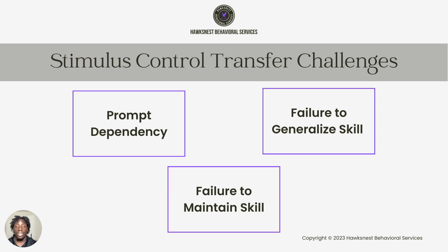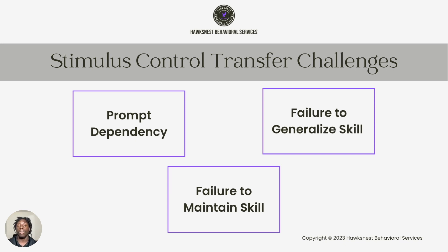Failure to generalize the skill is exactly what it sounds like — your learner having a difficult time being able to generalize the skill in a new environment or across people. That can be a challenge to stimulus control transfer. Then, failure to maintain the skill — them having a difficult time maintaining that skill, where each time we're looking for them to utilize it, they may have forgotten or are just not able to use that skill in that moment.